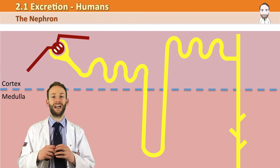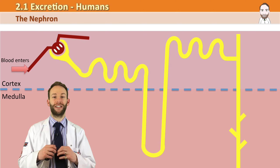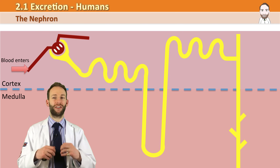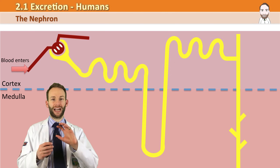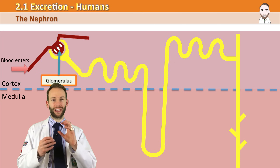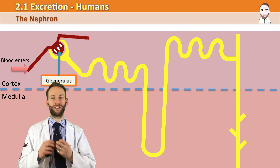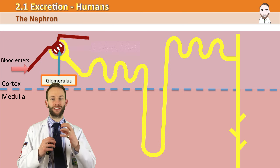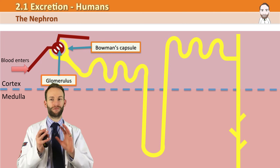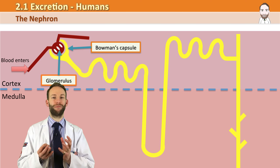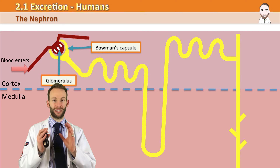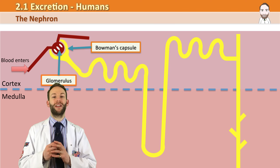The blood enters down the afferent arteriole at really, really high pressure — we say it has a very high hydrostatic pressure. That arteriole then forms a ball of capillaries called the glomerulus, which is at the start of the nephron. It is surrounded by a cup called the Bowman's capsule, which is the beginning of the nephron tubule.